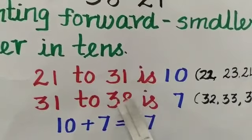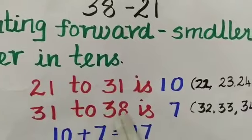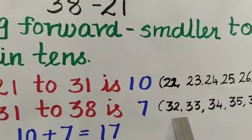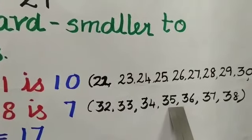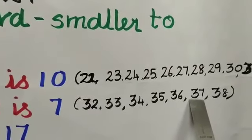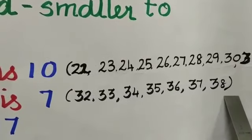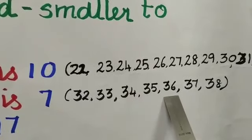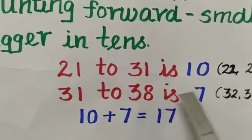Then 31 to 38. Why 38? The question is 38. So 31 to 38 we have to start counting from 32. So 32, 33, 34, 35, 36, 37 and 38. Now we will count how many numbers are there: 1, 2, 3, 4, 5, 6 and 7. So 31 to 38 is 7.